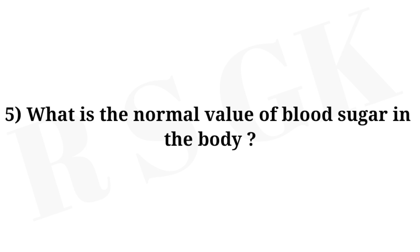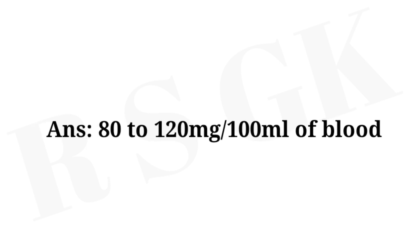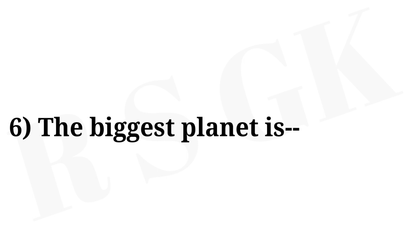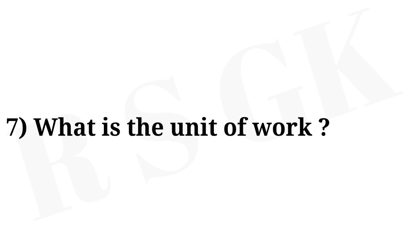Question number 5: what is the normal value of blood sugar in the body? Answer: 80 to 120 mg per 100 ml of blood. Question number 6: the biggest planet is? Answer: Jupiter. Question number 7: what is the unit of work? Answer: Joule.